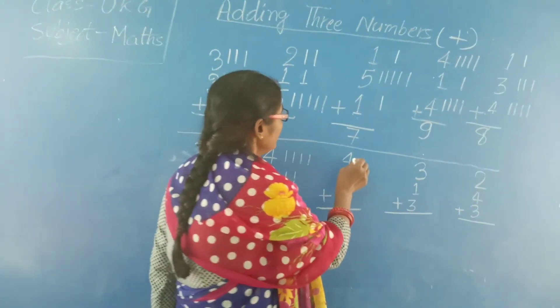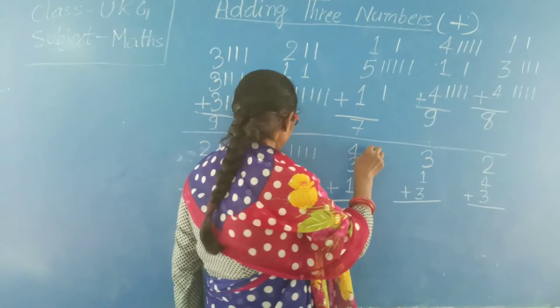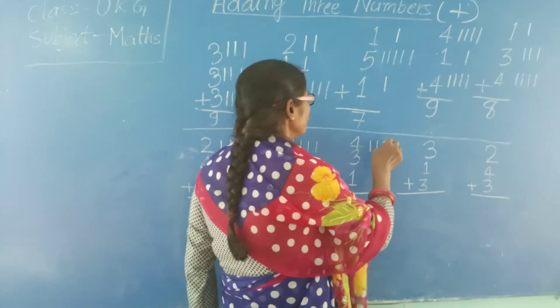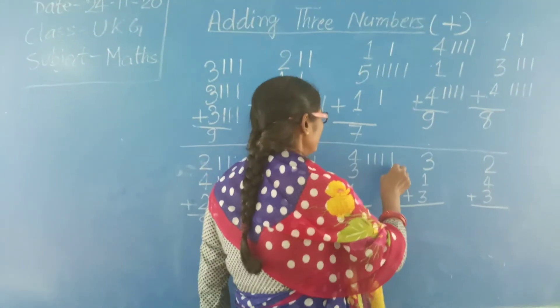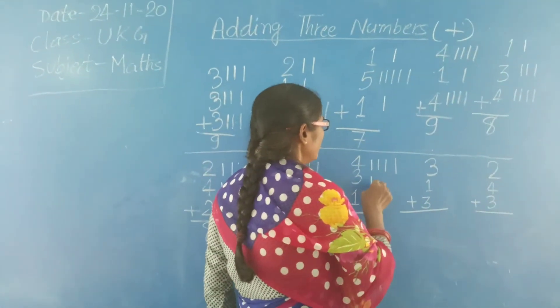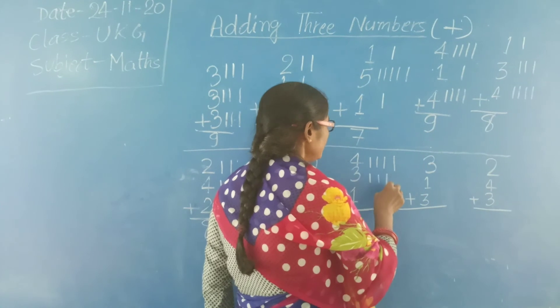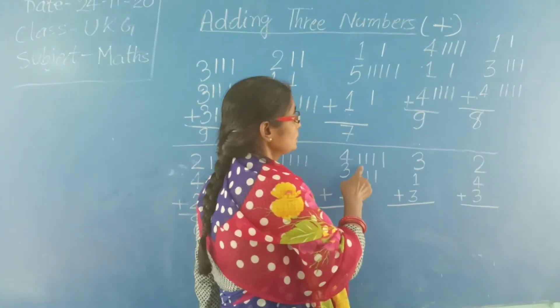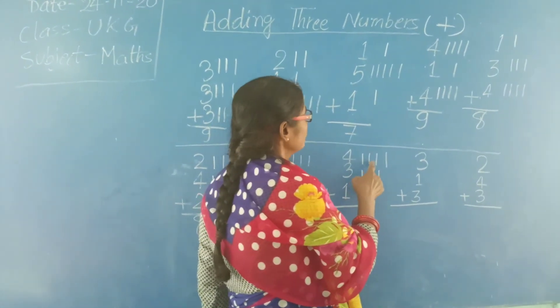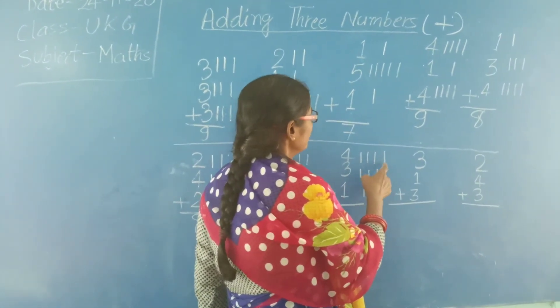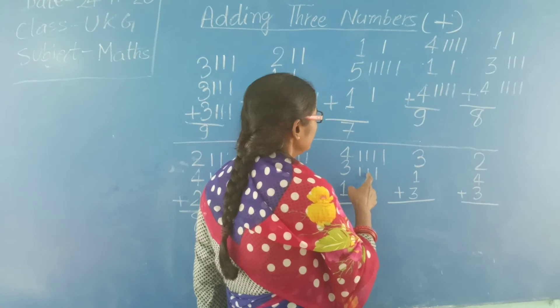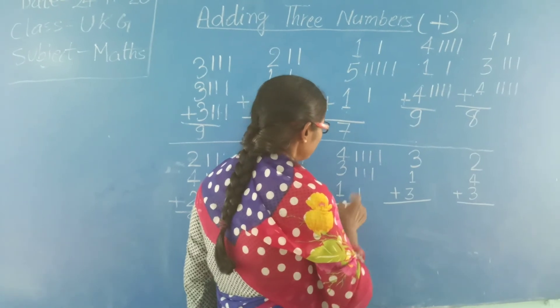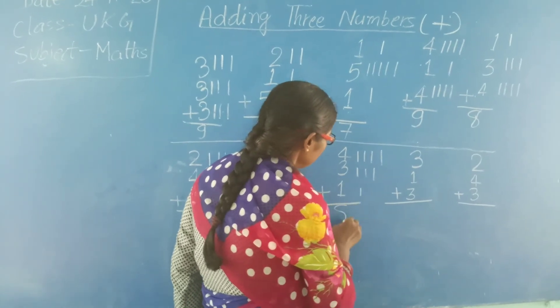Next: 4, 2, 3. Draw 4 lines: 1, 2, 3, 4. Then 2 lines: 1, 2. Then 3 lines: 1, 2, 3. Now count: 1, 2, 3, 4, 5, 6, 7, 8. The answer is 8.